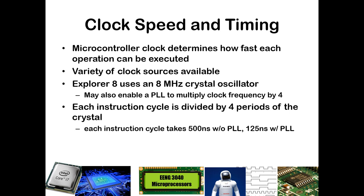If you take 8 MHz and divide by 4, that gets us down to a 2 MHz clock, which works out to 500 nanoseconds per instruction cycle if we're not using the PLL. If we are using the PLL, we get one-fourth of that — 125 nanoseconds for each instruction cycle. As we will see shortly, some instructions take one cycle and some take two cycles, so for two-cycle instructions it will take one full microsecond without the PLL, or 250 nanoseconds with the PLL.